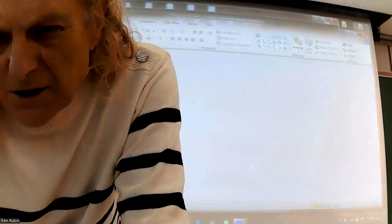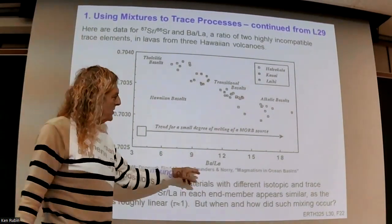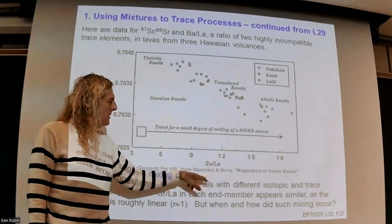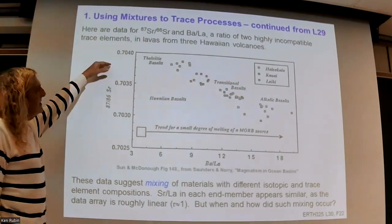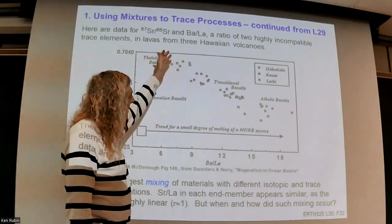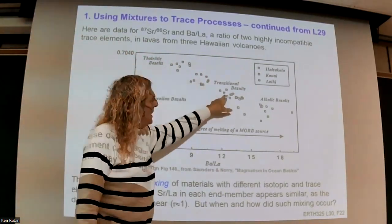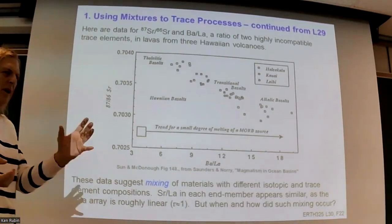That was the end of last time. Now let's continue with an example from Hawaii. This is a plot of the Ba/La ratio — barium being a highly incompatible alkaline earth element and lanthanum being the lightest rare earth element — versus the 87/86 Sr isotopic composition. This is an early compilation of rocks from Haleakalā and Maui, from Hawaii, and from Lō'ihi, Kama'ehu, and Kanaloa.